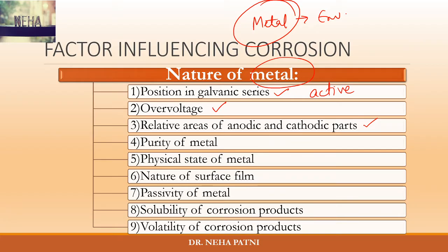Coming to relative areas of anodic and cathodic parts: corrosion is more rapid, severe, and highly localized if the anodic area is small. We have to ensure that the anodic area is not too small, and that the ratio of areas is proportional, because if the anodic area is small a more localized attack will happen. In the coming videos we will discuss these in detail one by one.